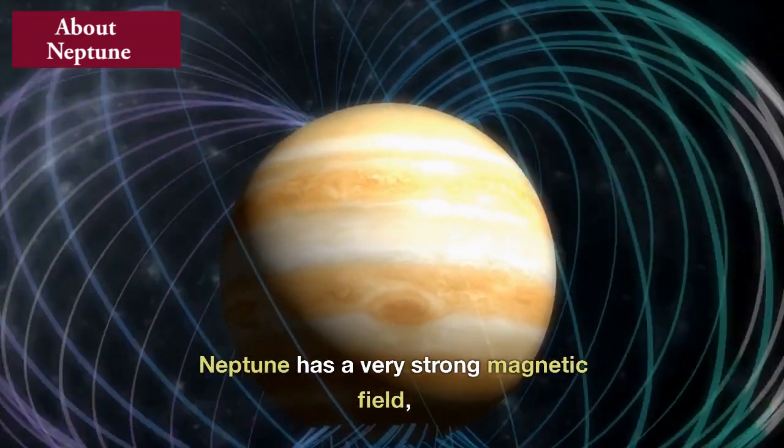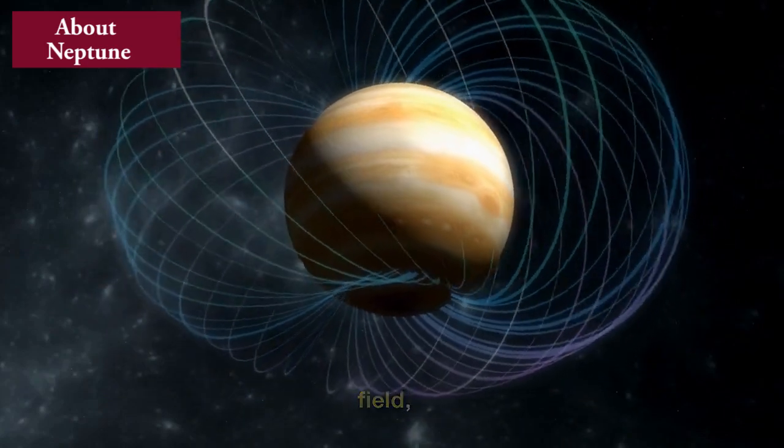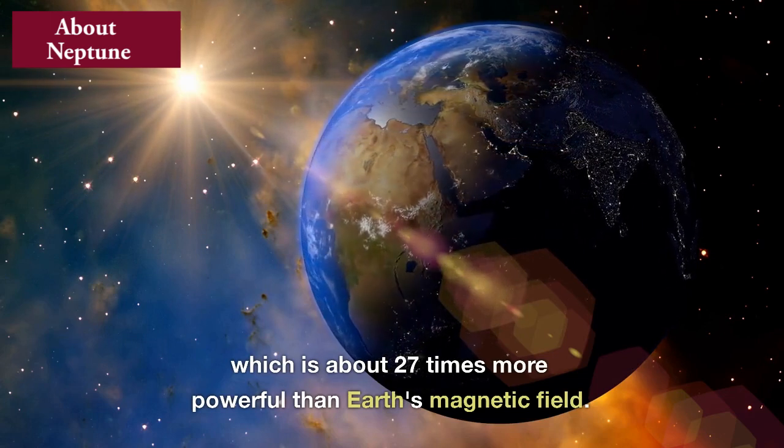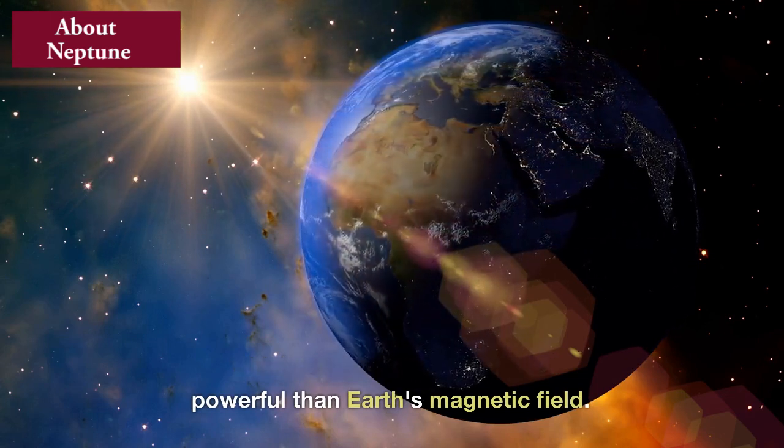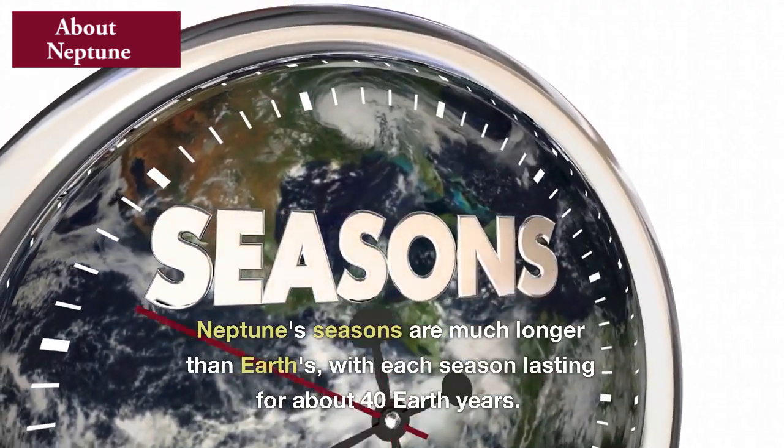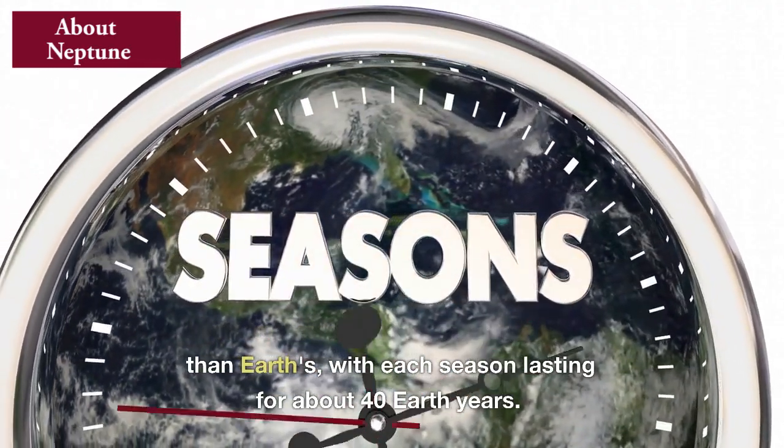Neptune has a very strong magnetic field, which is about 27 times more powerful than Earth's magnetic field. Neptune's seasons are much longer than Earth's, with each season lasting for about 40 Earth years.